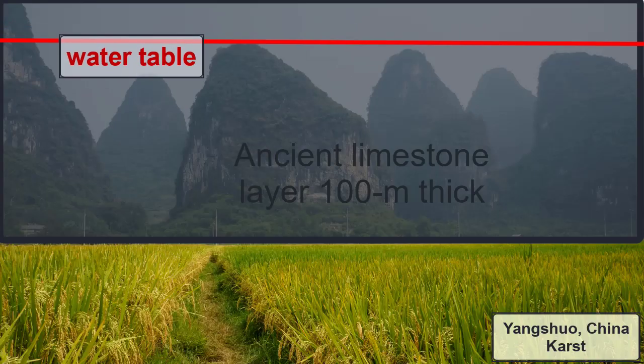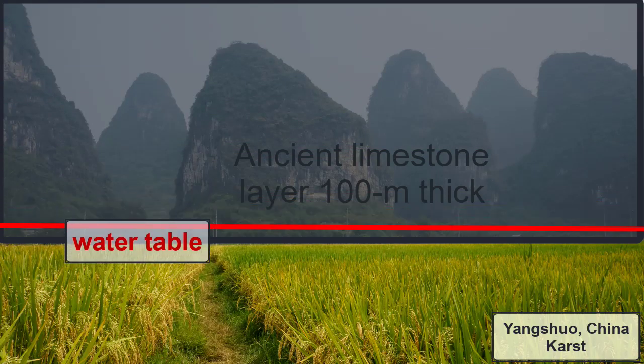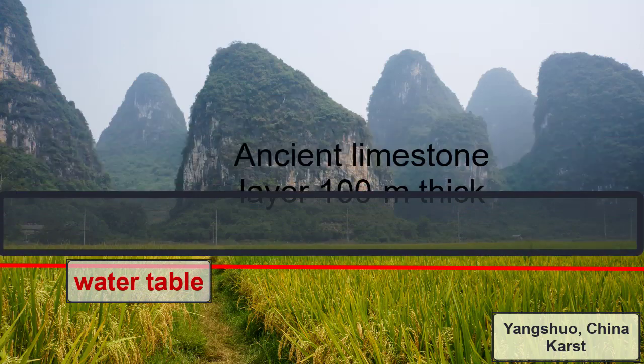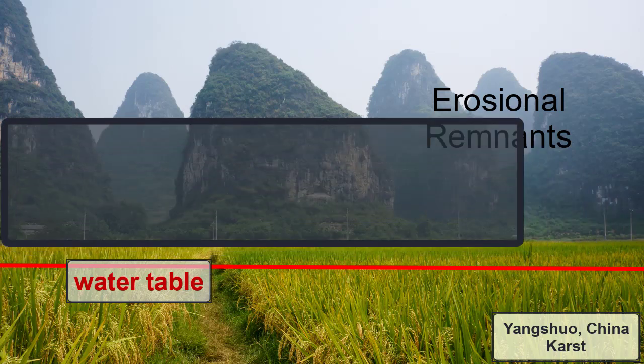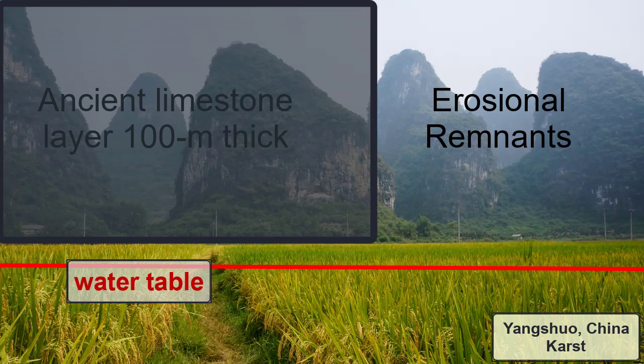When the water table has dropped completely and enough of the limestone has dissolved and all the cavern roofs have collapsed, the landscape takes on a different look. Steep-sided hills of limestone are scattered across the landscape as erosional remnants of the dissolution of the thick limestone layers that once blanketed the surface. Imagine this region was once a solid 100-meter thick layer of limestone, and now these hills are all that's left.